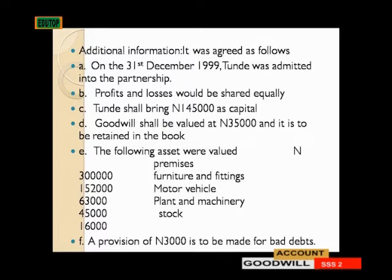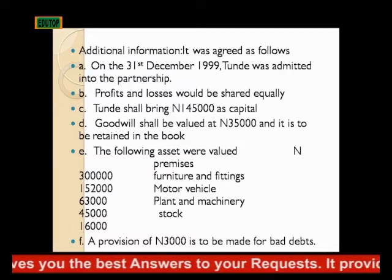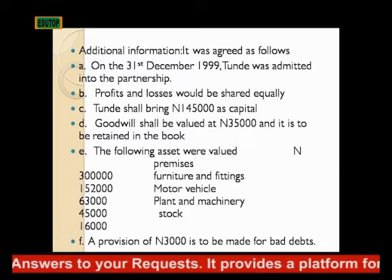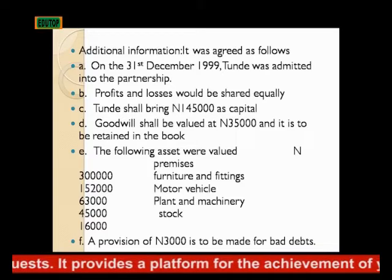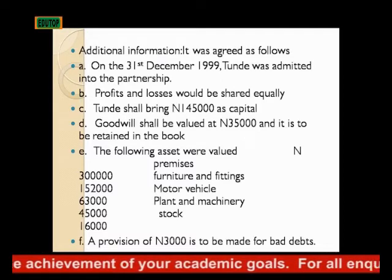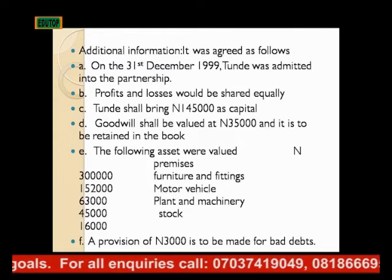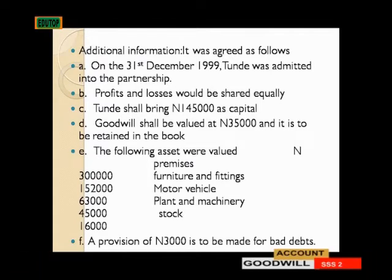Additional information: on 31st December 1999, Tunde was admitted into the partnership. When Tunde is admitted, they need to revalue the assets and current liabilities in the balance sheet to know the market value. Profit and loss will be shared equally. Tunde shall bring 145,000 as capital into the partnership, making four partners in total. Goodwill will be valued at 35,000 and is to be retained in the books — that is where goodwill arises on admission.